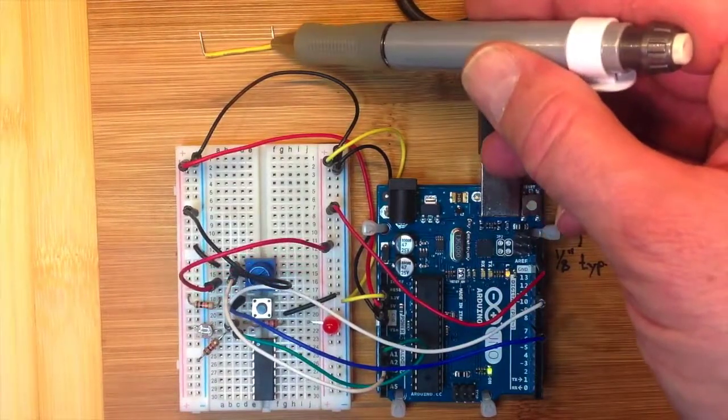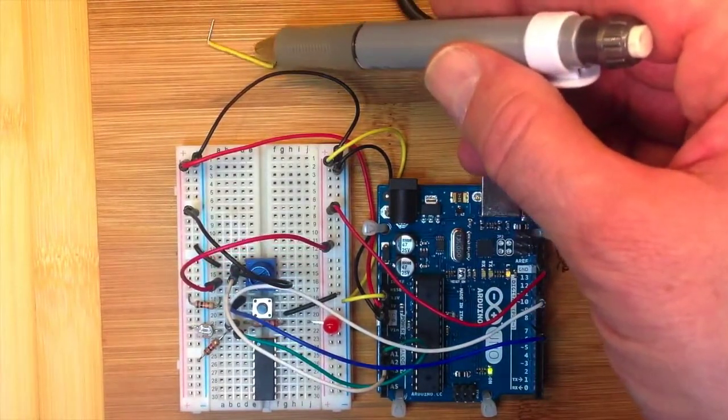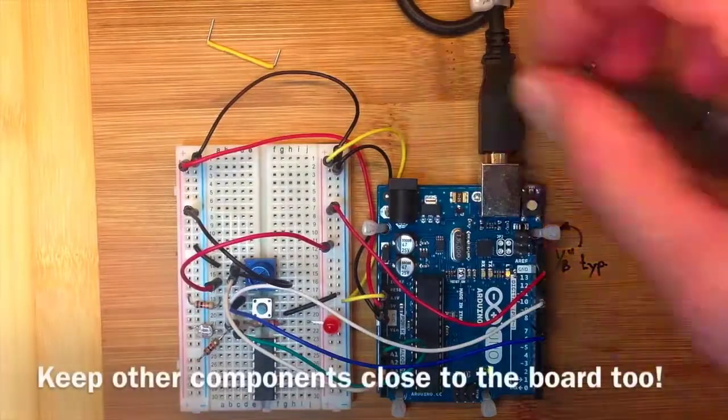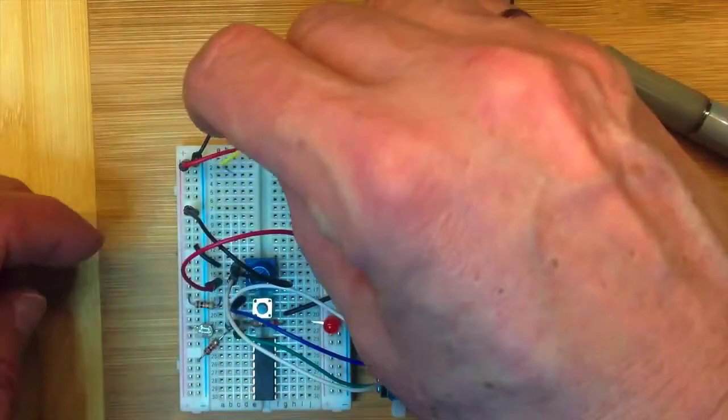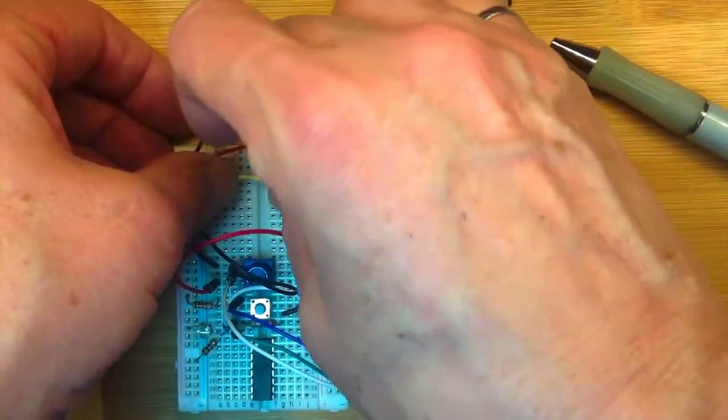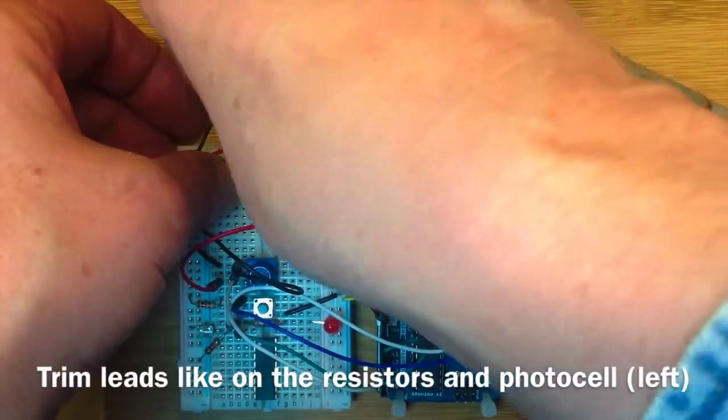But if you take a small piece of solid core wire like this, this hookup wire here, you can use that to span the spot between two locations on the breadboard by poking one end in like that and another end in like that.